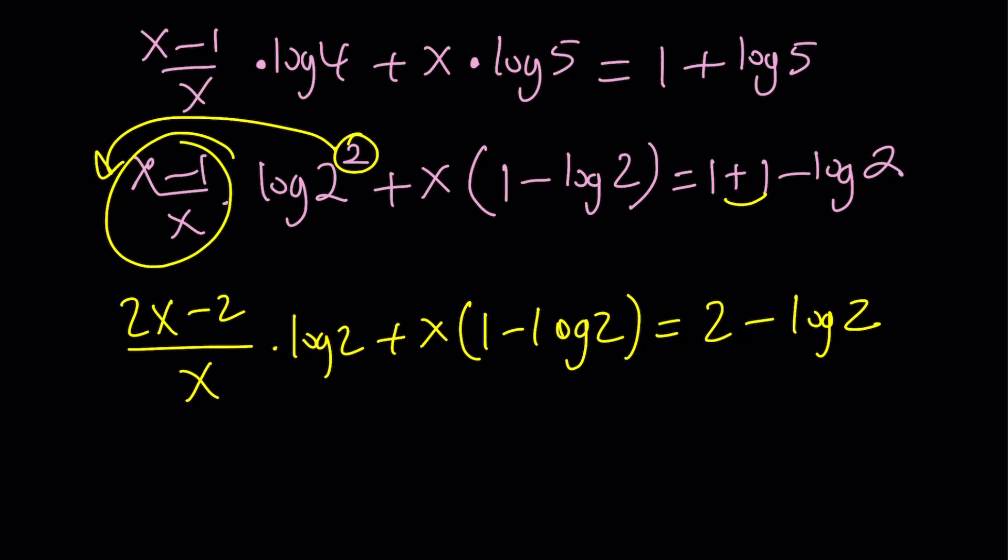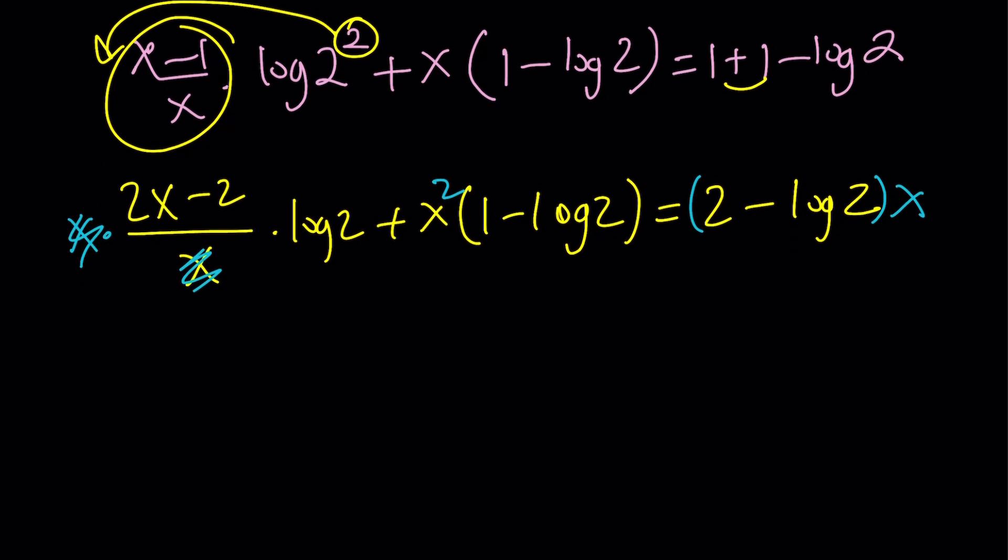We can go ahead and move this 2 to the front, making it 2x minus 2 over x times log 2 plus x times 1 minus log 2, which equals 2 minus log 2. Now here's the most important part: you don't want to deal with fractions. You want to get rid of the x at the bottom, so multiply everything by x.